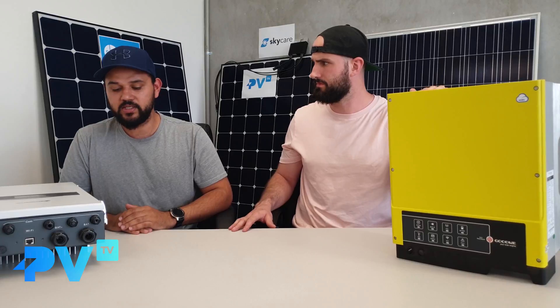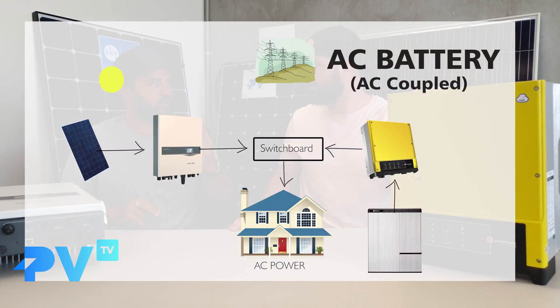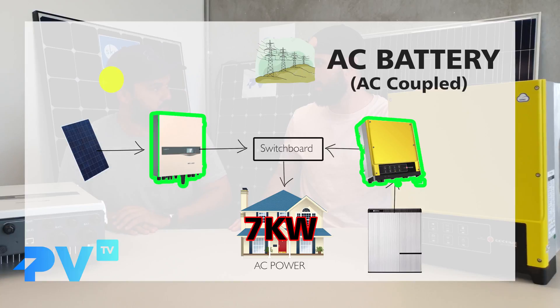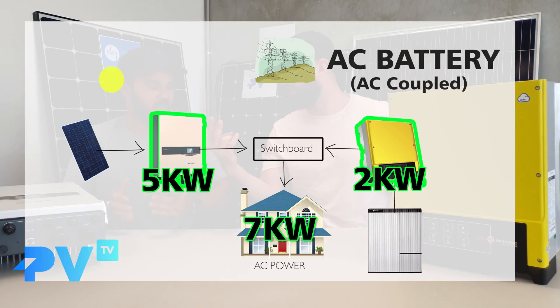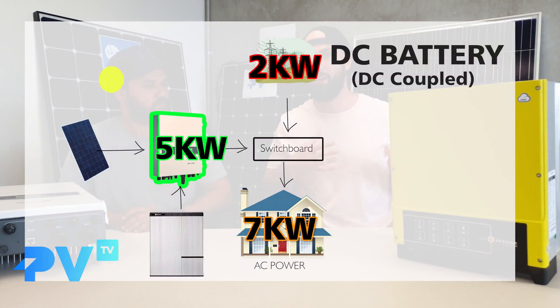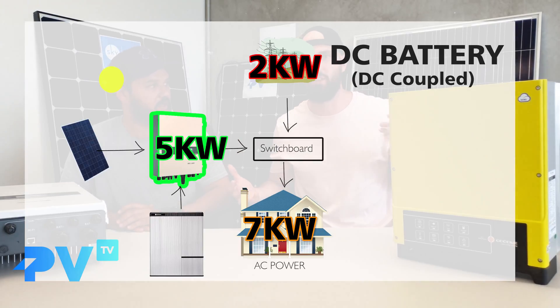The second reason is power output. With an AC battery you've essentially got two inverters: your solar inverter handling the solar panels and a separate battery inverter. So if the house needed seven kilowatts — say you turn on the oven and the kettle — it could take five kilowatts from the solar and two from the battery inverter. You get more output capacity from having an AC coupled battery. Most people won't need more than five kilowatts at a time, and a DC battery with solar in one unit can still output five kilowatts on average, which is plenty.